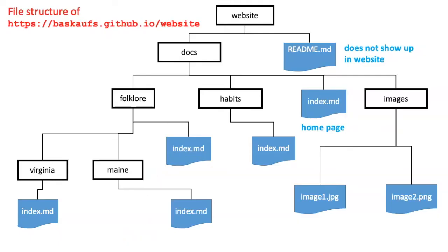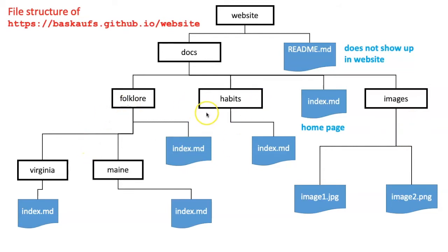Let's imagine that this website has a home page. We also have some other pages that we would like to have: folklore, habits, and then we'd also like to talk about the folklore specifically of Virginia and Maine. We also may want to store our images in another directory so that we don't clog up the main webpage directories with a bunch of images. This is the structure that we should use if we want to create a website in this way.